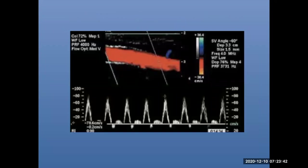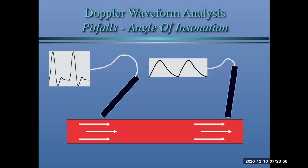Here's a duplex arterial ultrasound example. On top you have B-mode or grayscale imaging with color flow; below is a normal triphasic waveform. This is duplex arterial ultrasound. However, when obtaining Doppler waveform analysis, there are pitfalls — you can take a completely normal vessel and, based on your angle of insonation, make it appear completely abnormal.